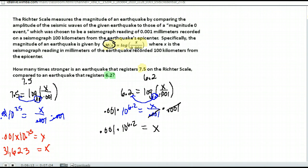So do 10 to the 6.2 power and then multiply by .001. And we have about 1,584.9. I'm going to go ahead and round that to 1,585.